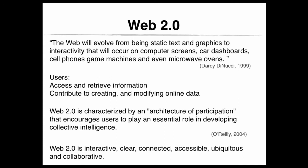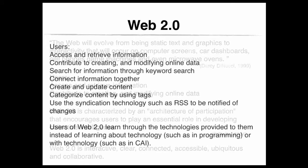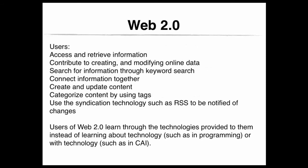Web 2.0 is interactive, clear, connected, accessible, ubiquitous, and collaborative. With Web 2.0, users are able to search for information through keyword search, connect information together, create and update content, categorize content using tags, and use syndication technology such as RSS to be notified of changes. Users of Web 2.0 learn through the technologies provided to them, instead of learning about technology such as in programming, or with technology such as in computer-assisted instruction.